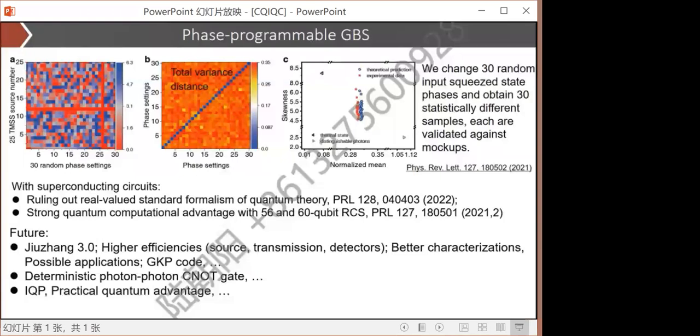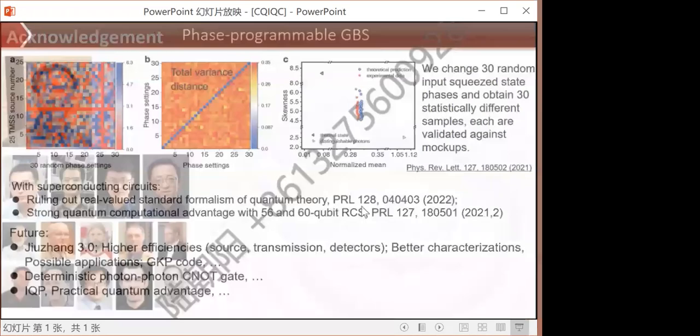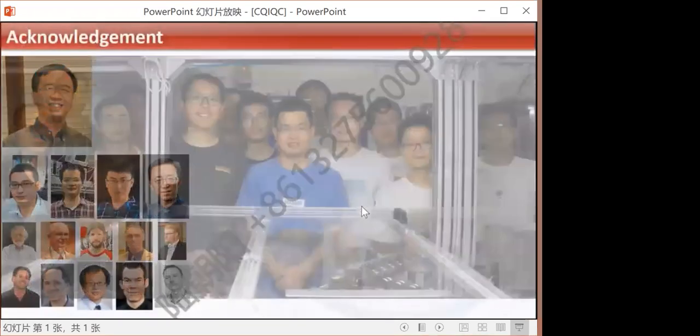My group is also interested in investigations of fundamental problems in quantum mechanics. For example, this method we ruled out real number quantum theory. In addition, our group also reproduced Google Sycamore result with larger size, with 56 and 60. This comes to the end of my talk.